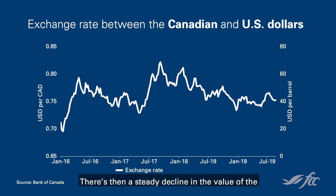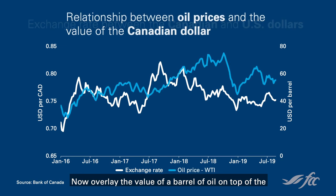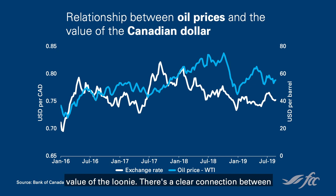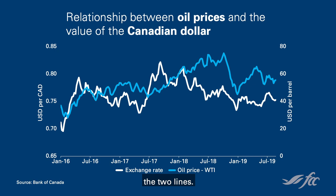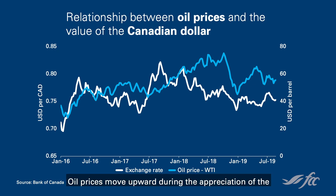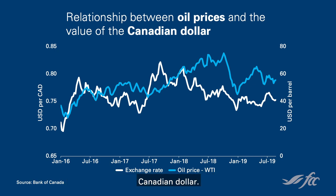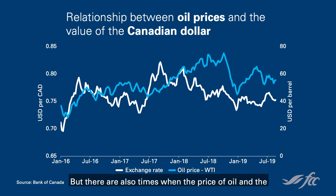There is then a steady decline in the value of the Canadian dollar starting in the summer of 2017. Now overlay the value of a barrel of oil on top of the value of the loonie. There's a clear connection between the two lines. Oil prices move upward during the appreciation of the Canadian dollar. But there are also times when the price of oil and the value of the loonie did not move together.